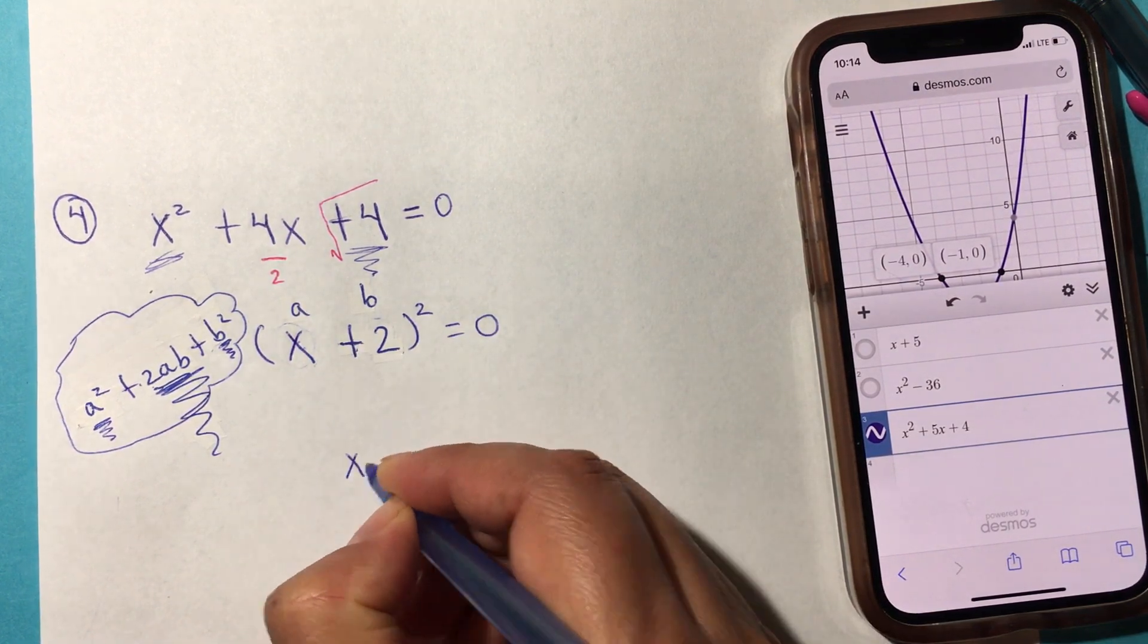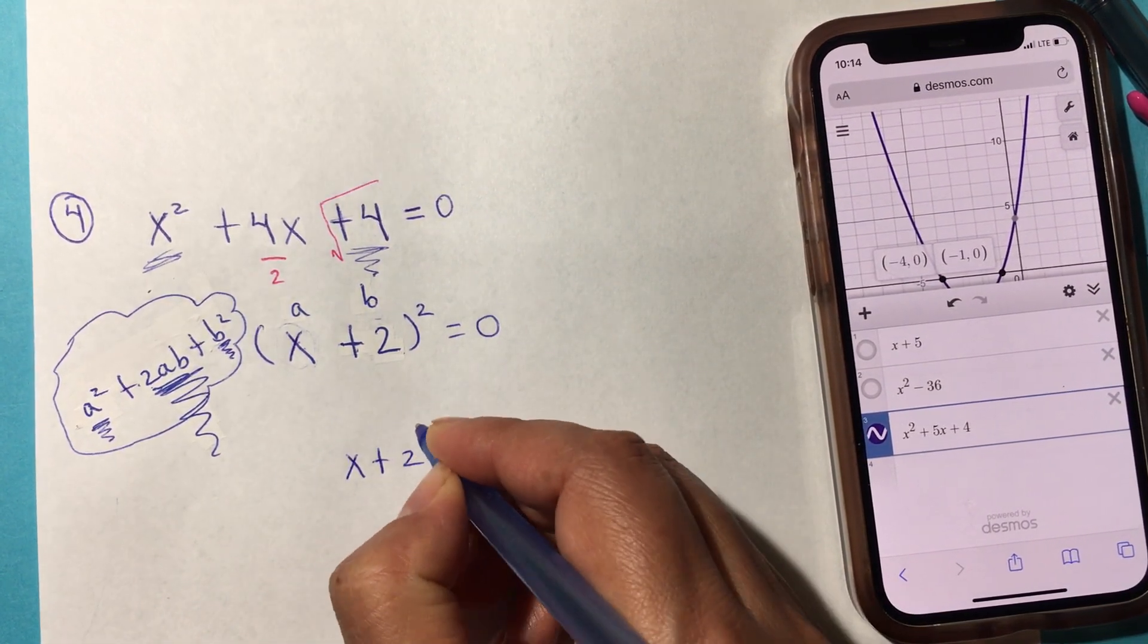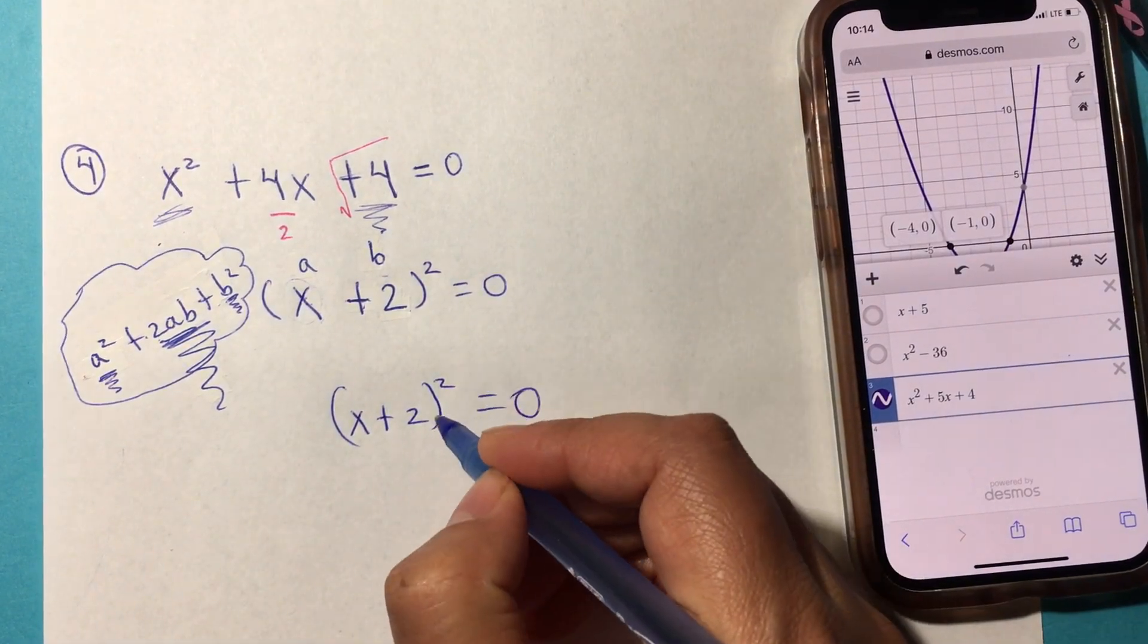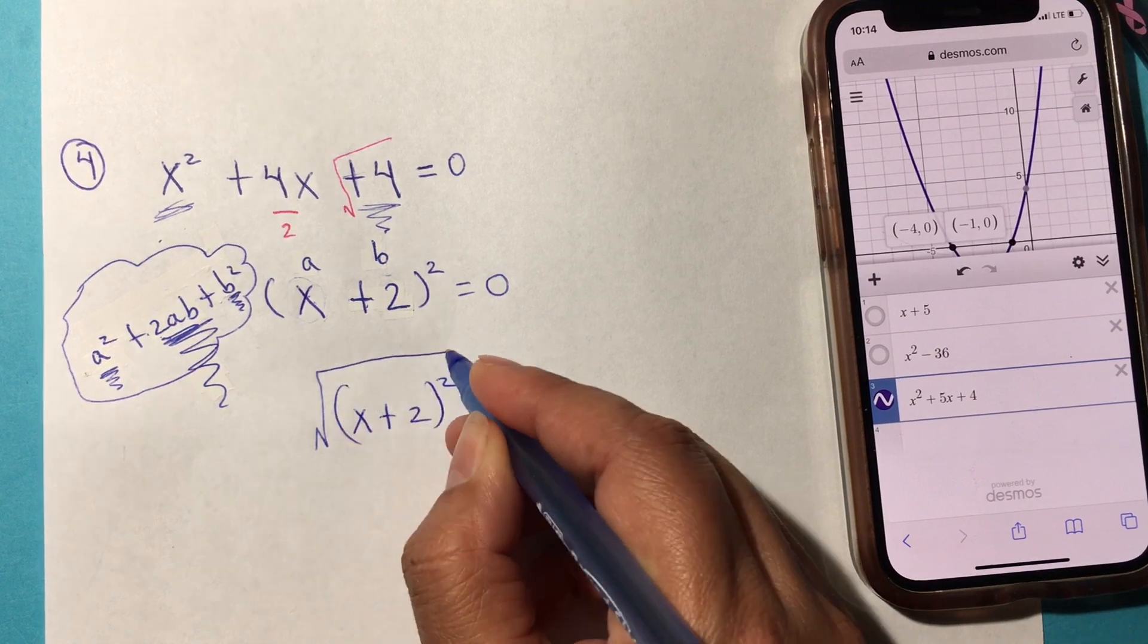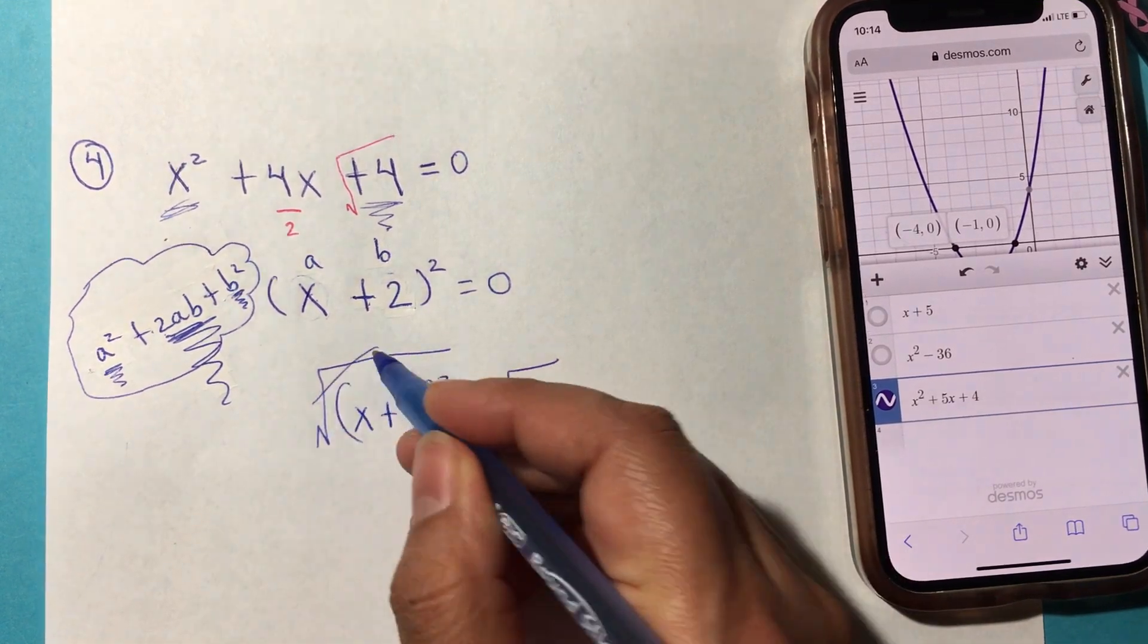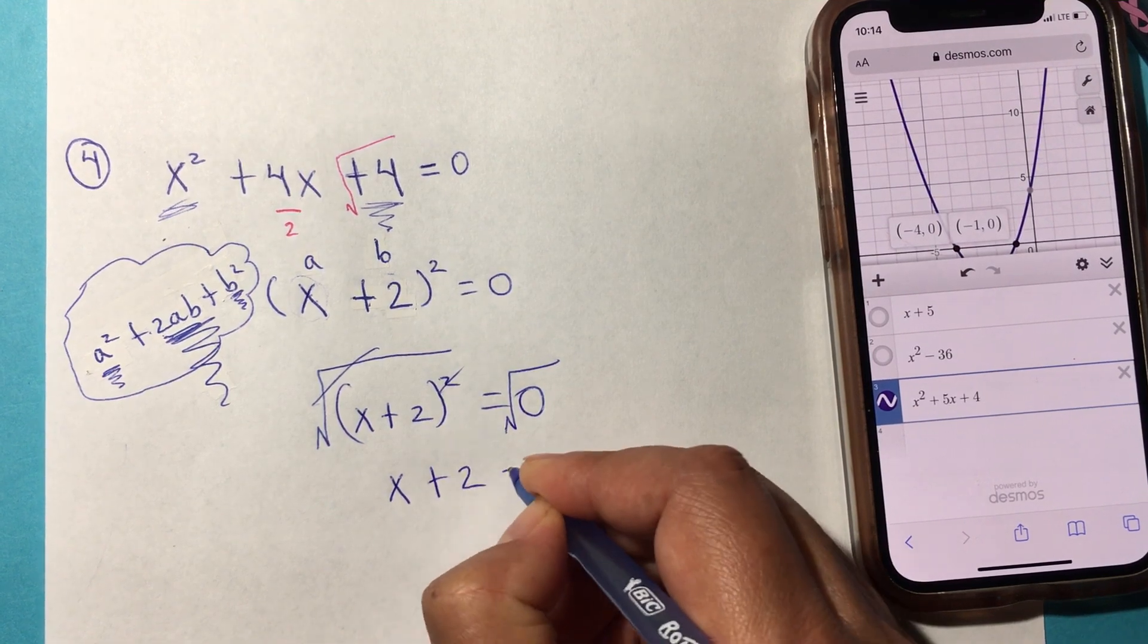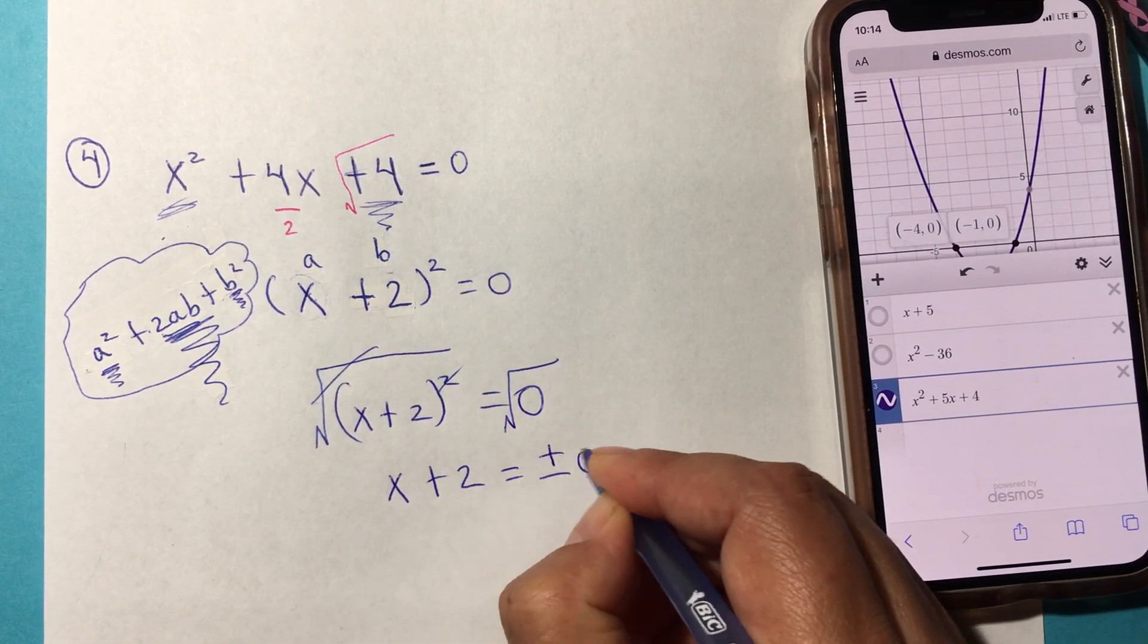But the middle term is twice a times b. So 2 times x is 2x, 2x times positive 2 is 4x. Let me bring it down so it looks cleaner. (x + 2)² = 0. To solve for x, we're going to take the square root of both sides. This cancels, and you'll get x + 2 = ±0.